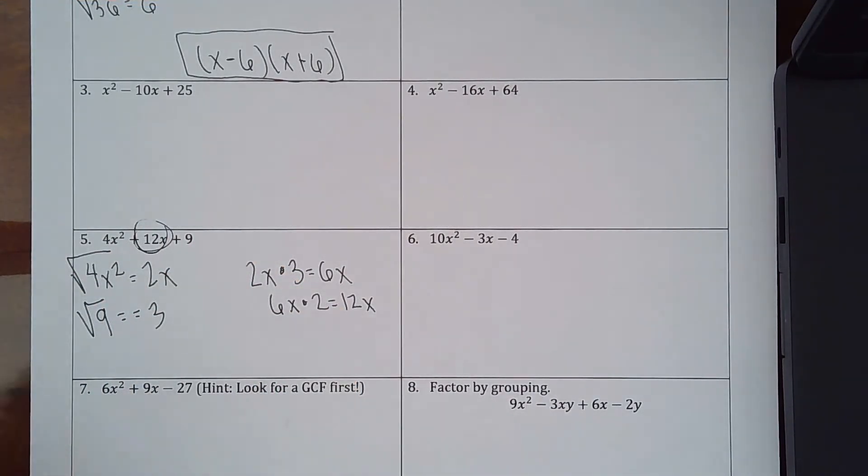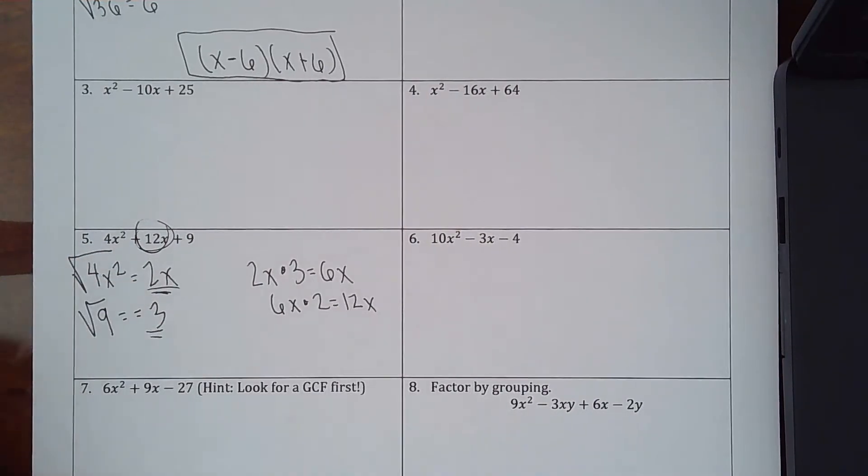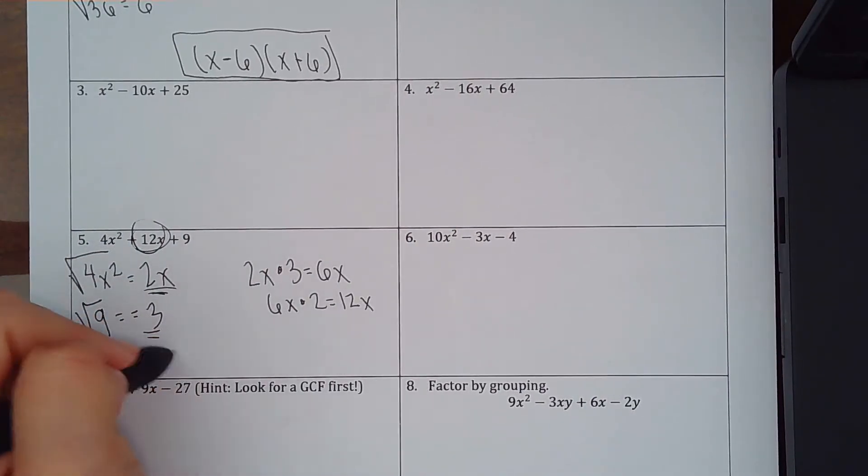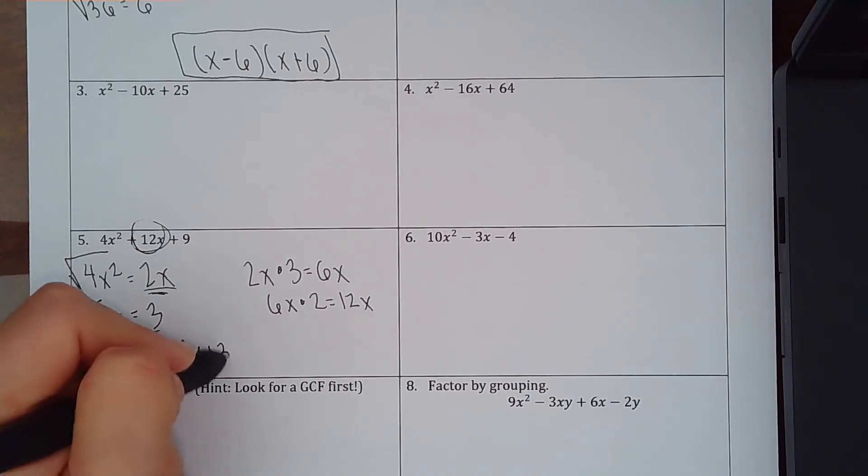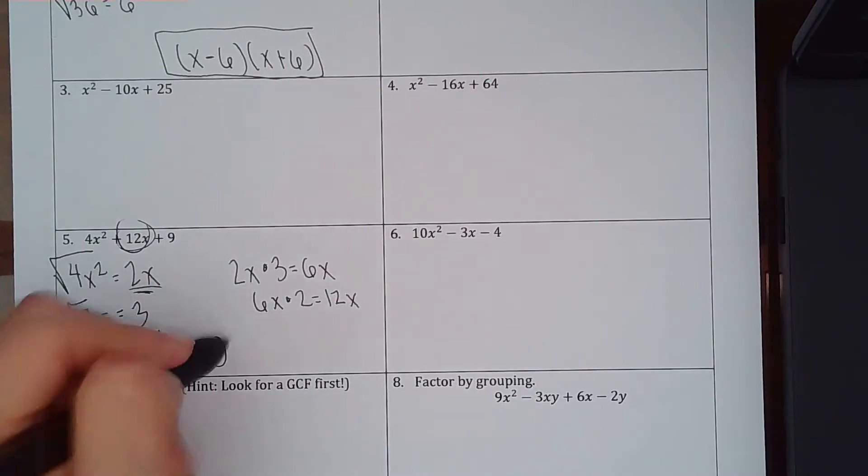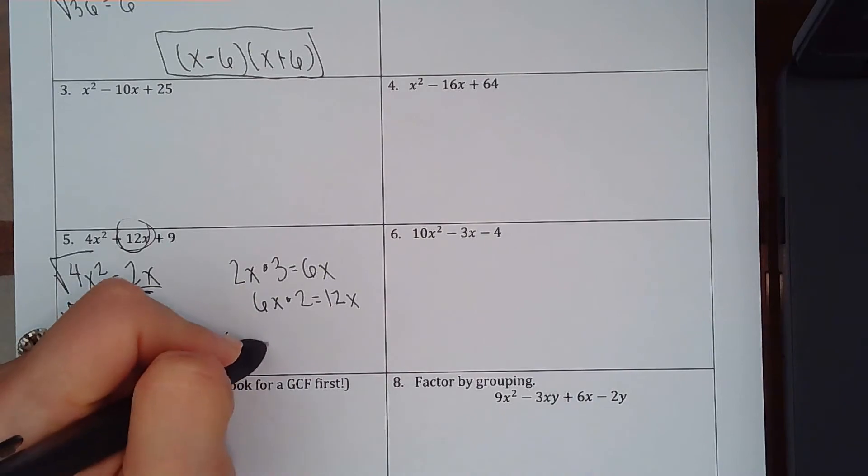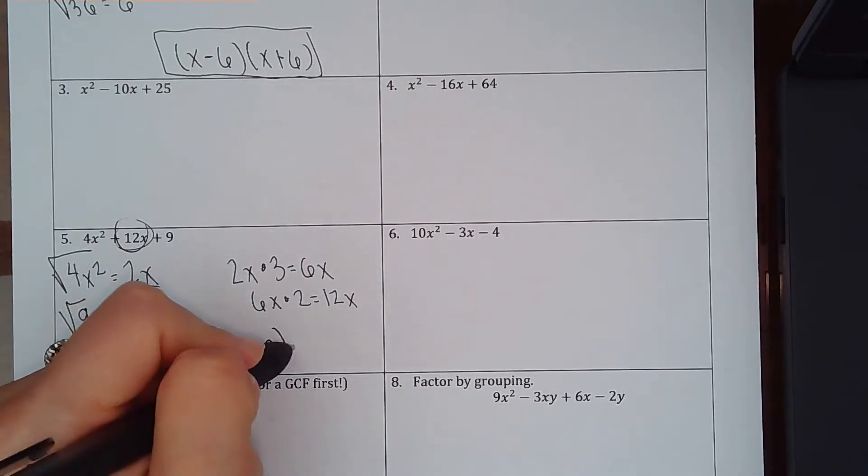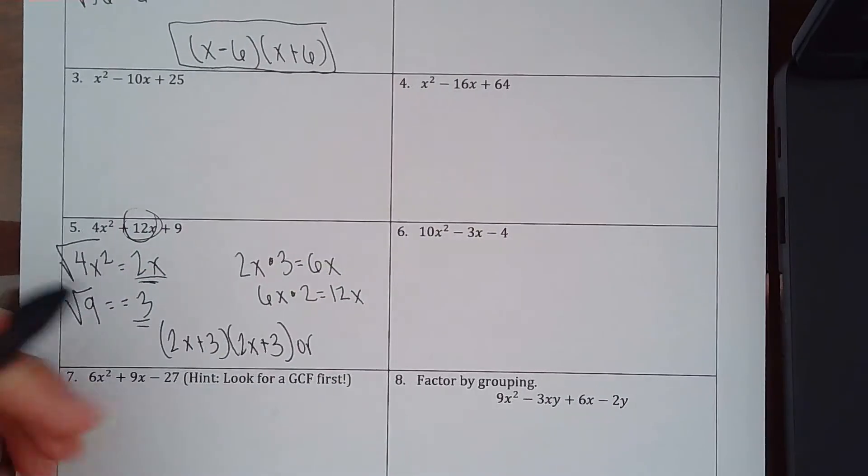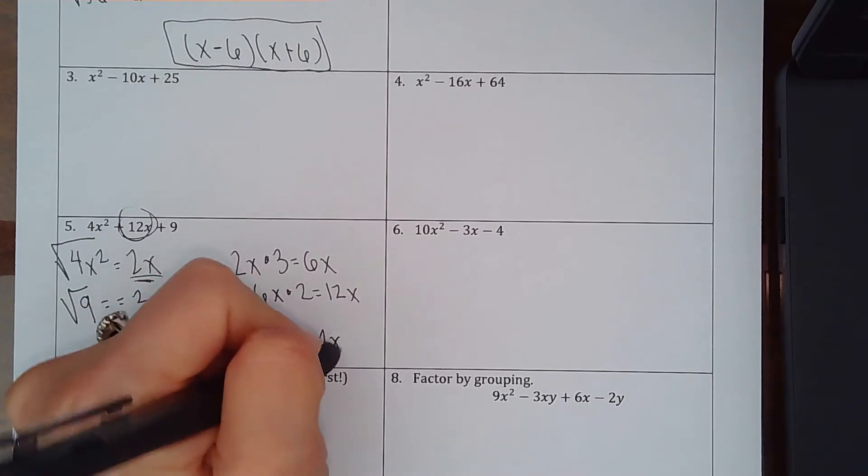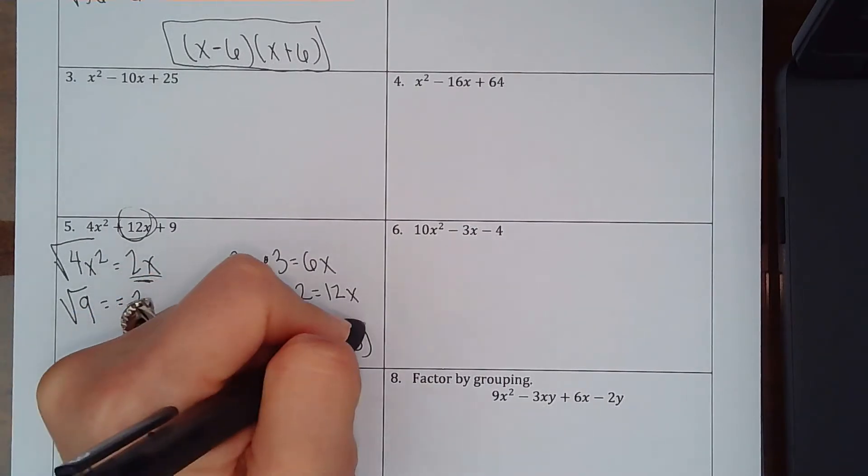So that lets me know that I do it right. But all I need to do is take these two terms and write them in a parenthesis. So it's 2x plus 3 times 2x plus 3, or if you wanted to write it, which I actually prefer you do, is 2x plus 3 squared.